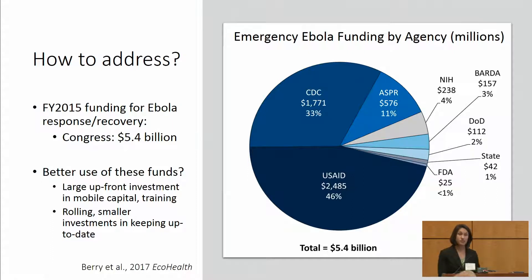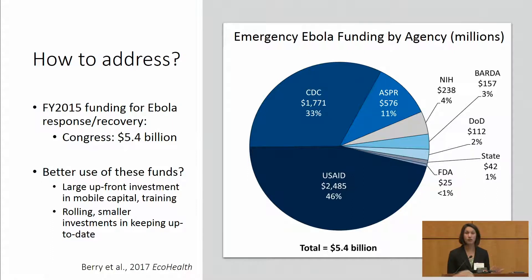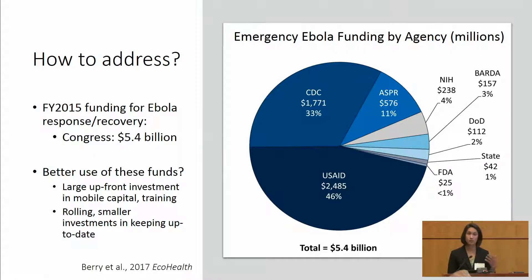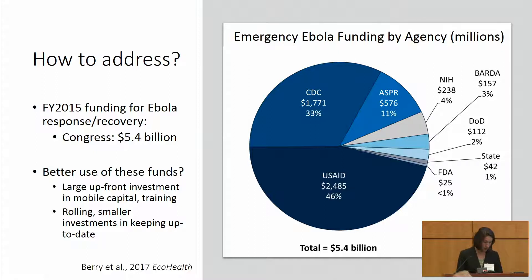If we invest $1 billion in this network today and also invest in keeping that technology and training up to date — about $50 million a year for the foreseeable future — we found that would result in a savings of about $11 billion.